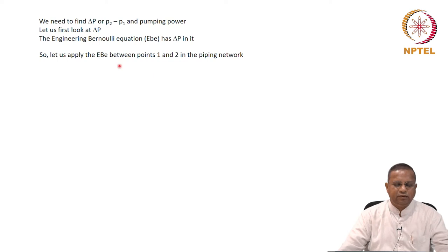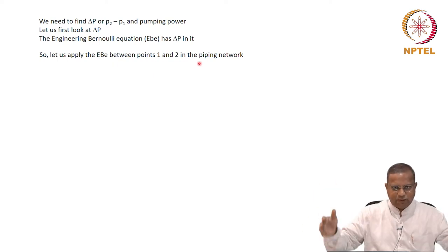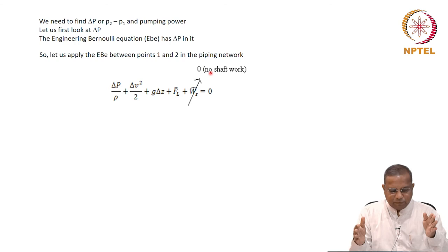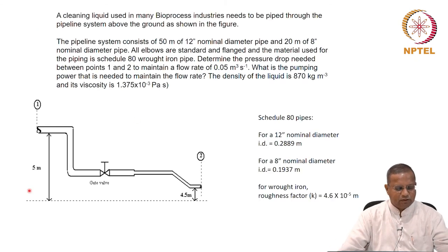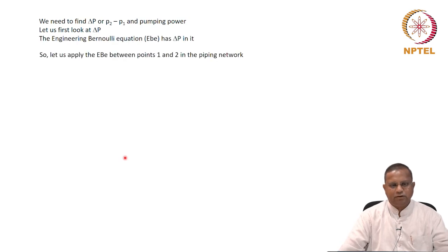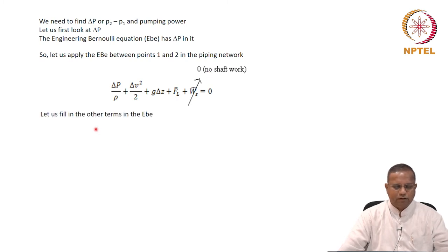Let us apply the engineering Bernoulli equation between points 1 and 2 in the piping network — we can apply it across cross-sections. So: delta p / rho + delta(v²/2) + g·delta z + h_f = w_s_hat = 0. There is no pump as part of the piping network here, so we are focusing on the part that does not have a pump. Therefore there is no shaft work — only when a pump is present do you need to worry about shaft work. So here there is no shaft work, and we can start filling in the other terms.